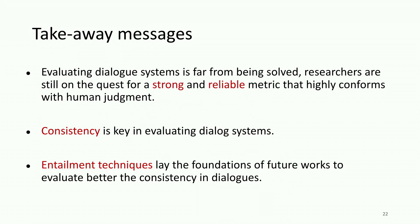The takeaway messages are that evaluating dialogue systems is very far from being solved, and researchers are still on the quest for a strong and reliable metric that highly correlates with human judgment. Consistency is a key factor in evaluating dialogue systems, and what we have presented here is a first step towards achieving this goal. Entailment techniques, according to our results, lay the foundation for future work to better evaluate consistency in dialogues.